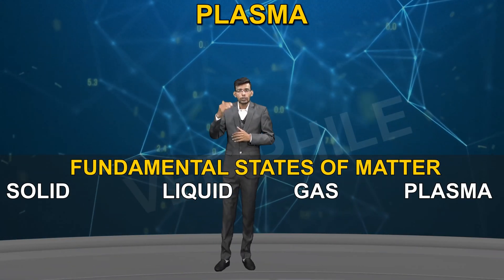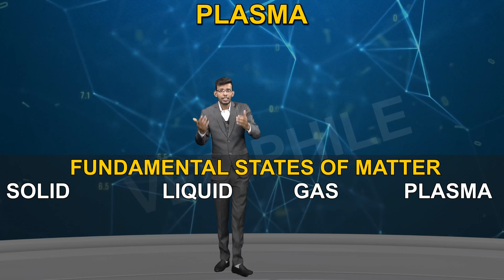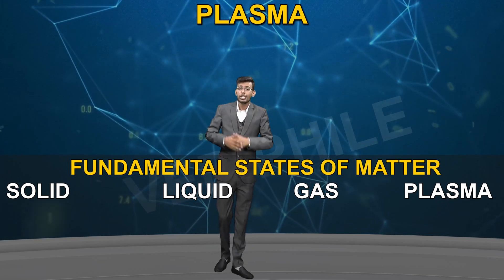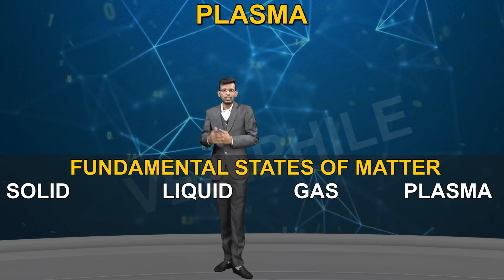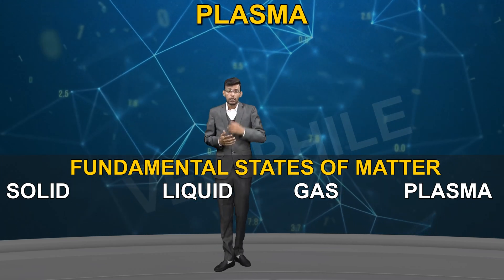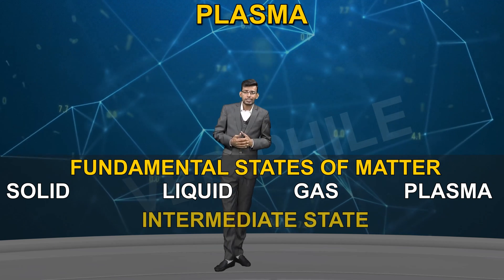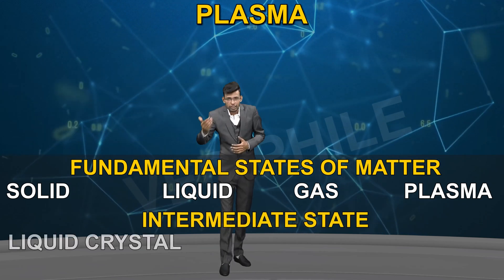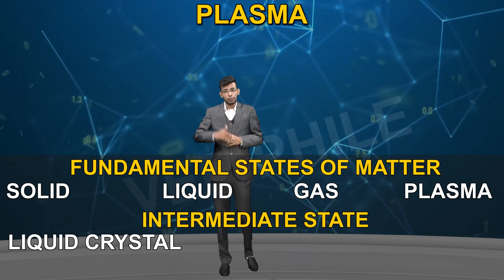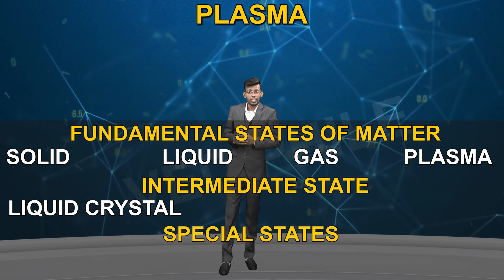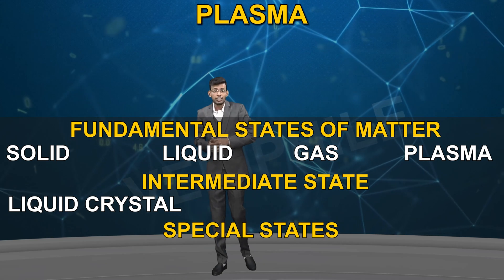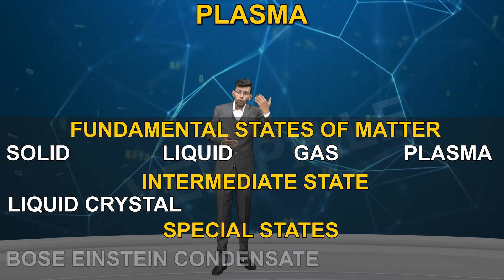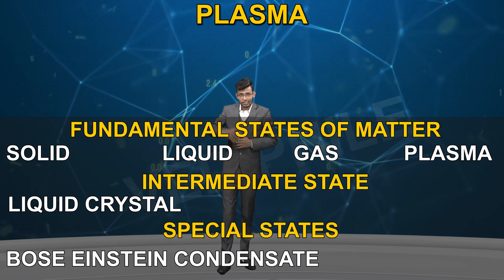There are also intermediate states or states that exist under specific conditions — for example, liquid crystals as an intermediate state, and specific conditions like the superconducting case and Bose-Einstein condensate.